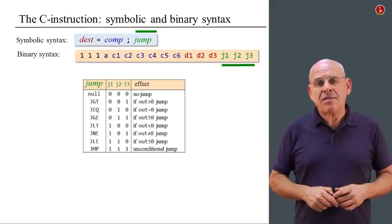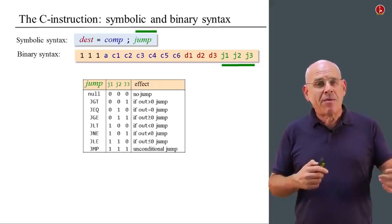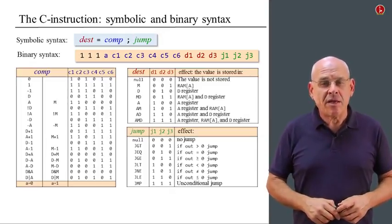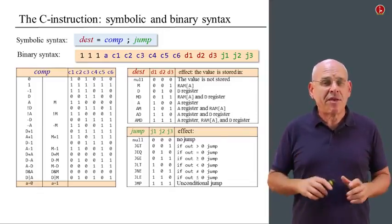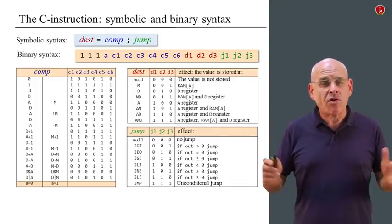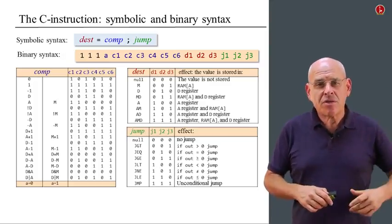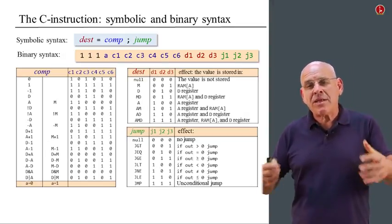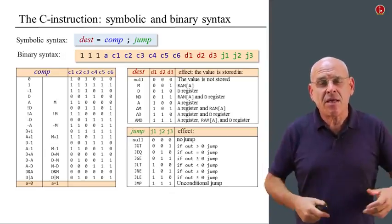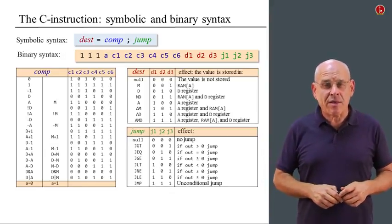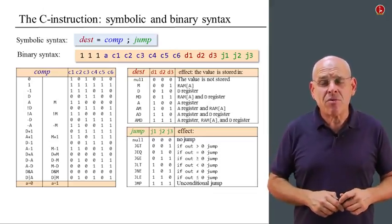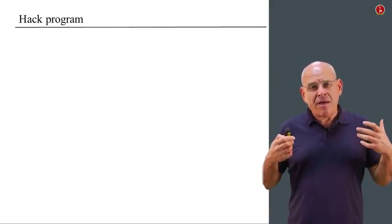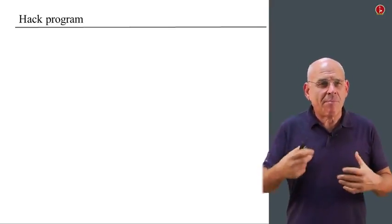This basically sums up the mapping between the symbols and the binary codes. If you want to put it all together, here is a complete specification of the C instruction in all its glory, both in the symbolic rendition and in the binary rendition. If you had to write a computer program to translate from one language to the other, you can begin to see how you can use this logic. This is something that we are going to do in the last week of this course.